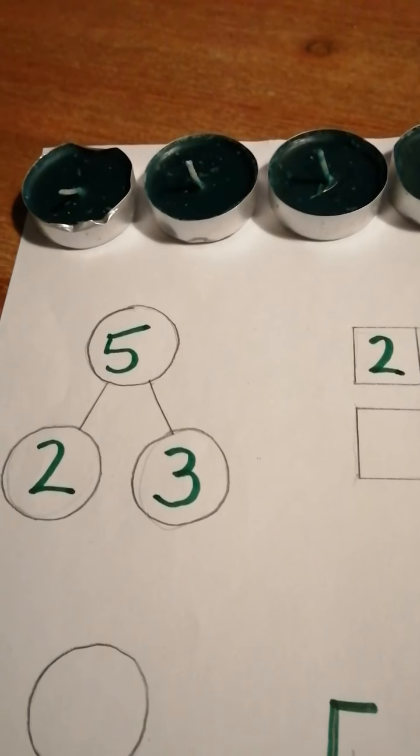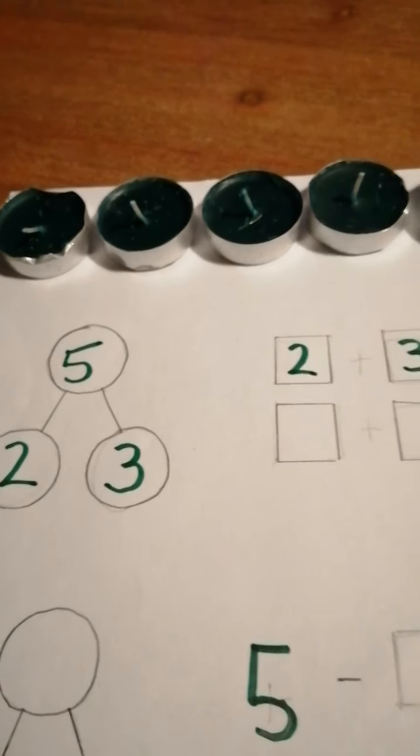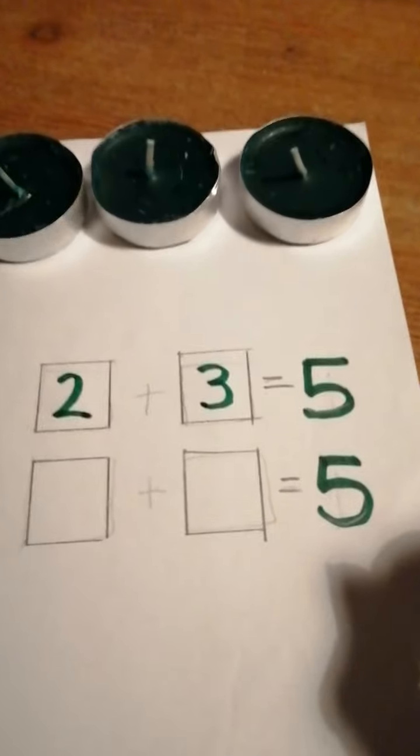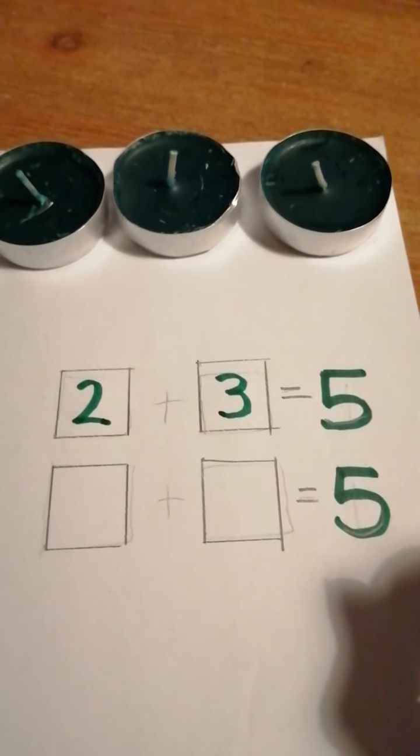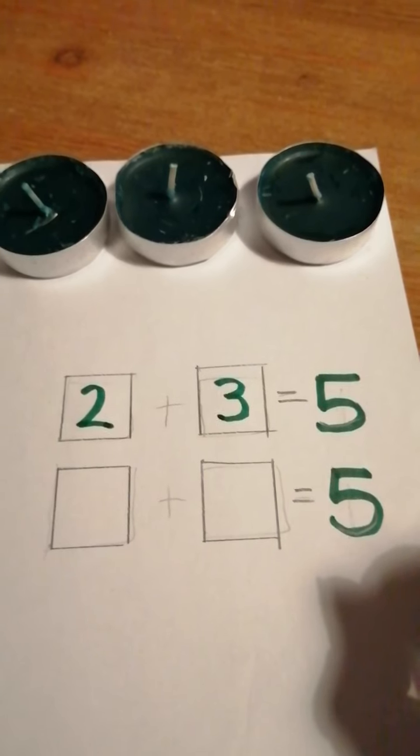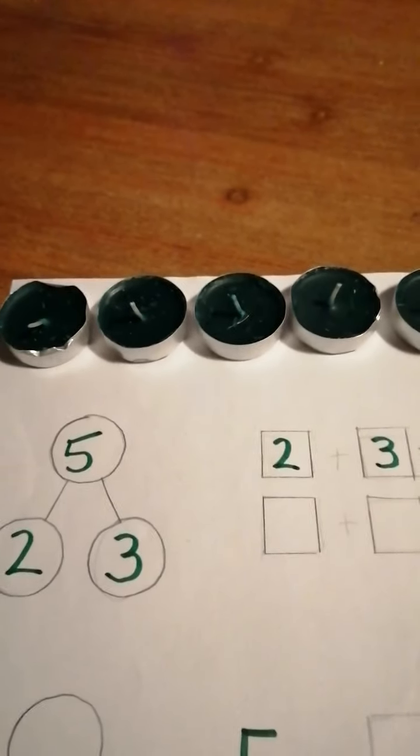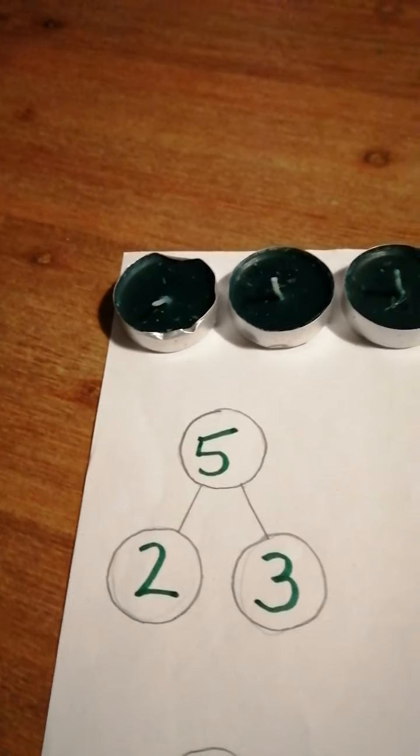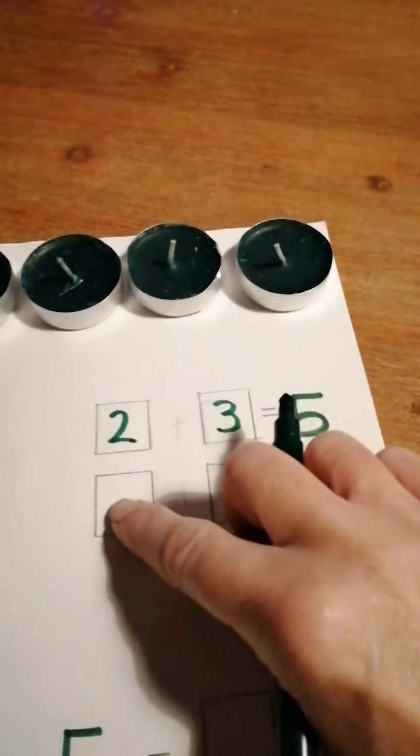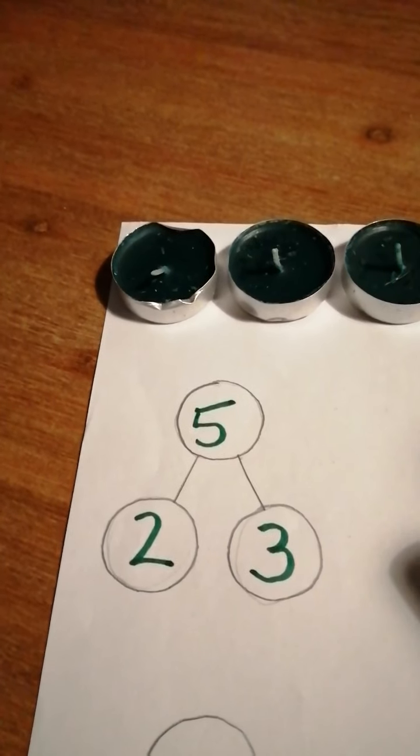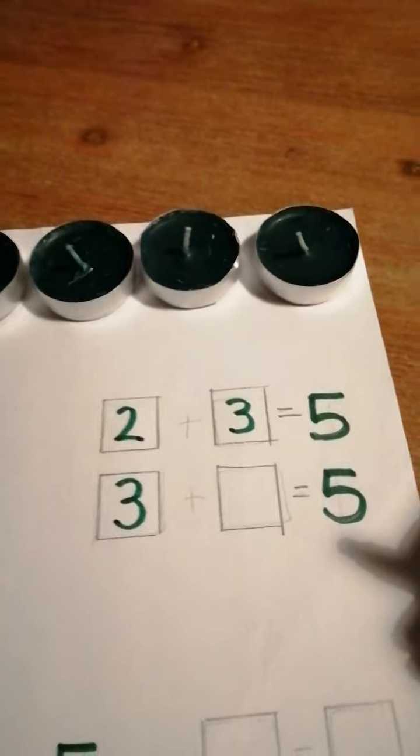So my first sum, I could put 2 add 3 equals 5. How could I make my next sum look different? That's right. We're just going to turn the numbers around. So instead of using 2 in this first part, I'm going to use the number 3.